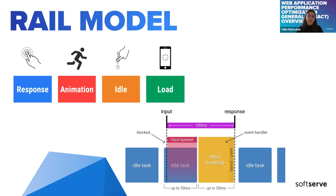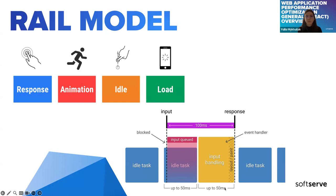RAIL stands for Response, Animation, Idle, and Load. The first letter is Response — there should be a quick response to a button click so the user doesn't feel any delay. We should finish the task in 50 milliseconds in order to show a response in 100 milliseconds. If more than 100 milliseconds is needed, we should show a loader. The task takes up to 50 milliseconds idling, then we handle input or click and should show a response and paint it within 100 milliseconds total.